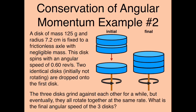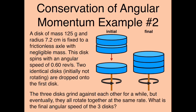Initially, the discs are going to grind against each other for a while, but if you wait long enough they're all going to be rotating at the same rate. The final state is all three discs rotating together at the same exact rate. The question is: what is that final angular speed of the three discs?